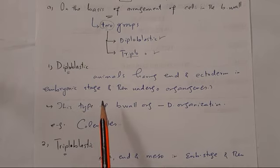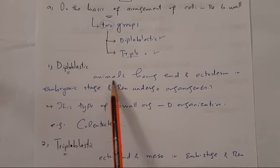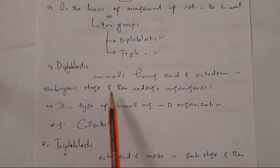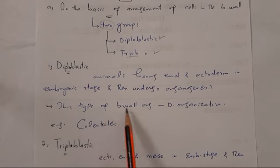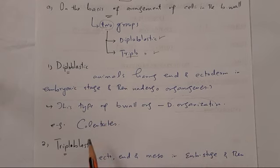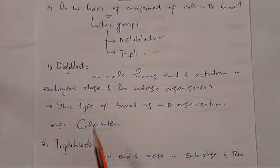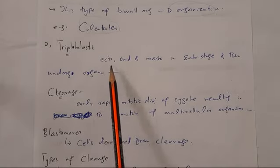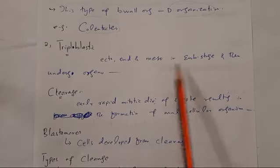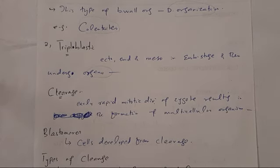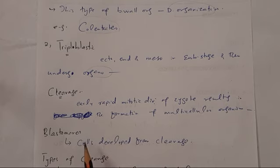Diploblastic animals are those having endoderm and ectoderm in the embryonic stage and then undergoing organogenesis — for example, phylum Coelenterata, which are diploblastic. Triploblastic animals are those having ectoderm, endoderm, and mesoderm in the embryonic stage and then undergoing organogenesis. Cleavage is the early rapid mitotic divisions of the zygote resulting in formation of a multicellular organism. Cells developed from cleavage are called blastomeres.